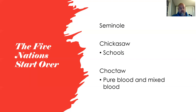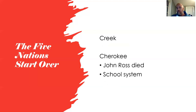Choctaw society was divided into roughly three parts, similar to the Cherokee. Full-bloods were typically farmers and cattlemen. White people could live among the Choctaw with special permission as tenant farmers, clearing land and planting crops, receiving crops as payment. Mixed-blood Choctaw lived in towns and often owned trading posts or were involved in coal, timber, or stone businesses.